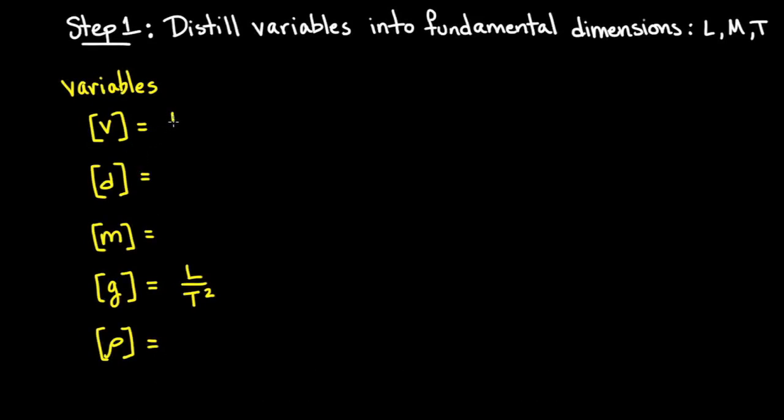Velocity is length per time. Diameter is length. Mass is mass. And density is mass per length cubed.